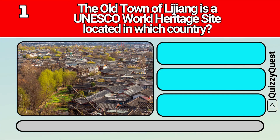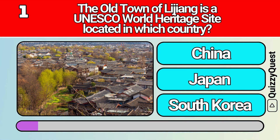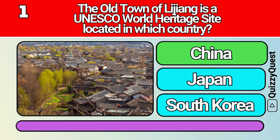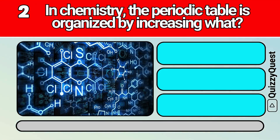The Old Town of Lijiang is a UNESCO World Heritage Site located in which country? In chemistry, the periodic table is organized by increasing what?